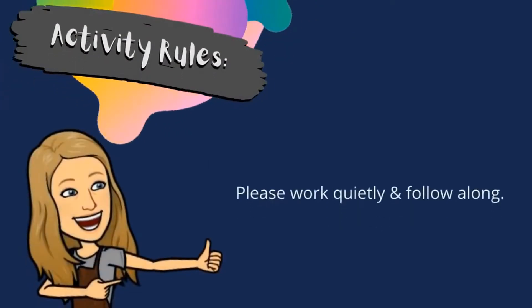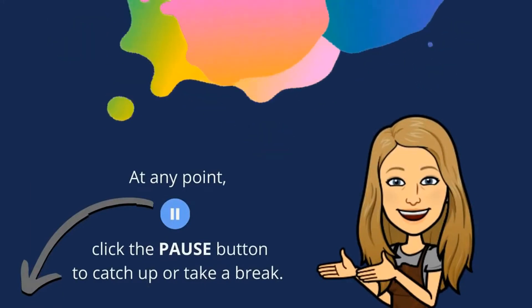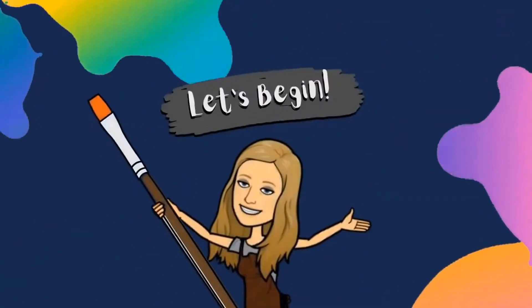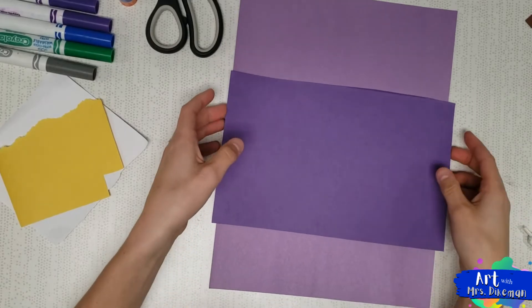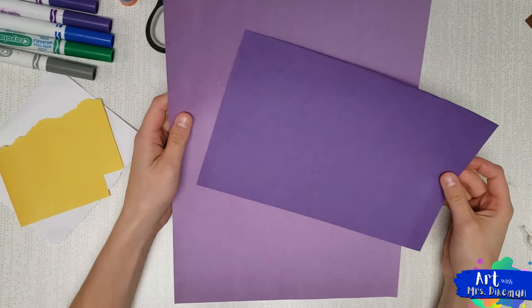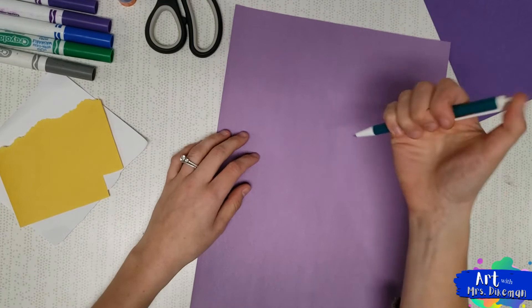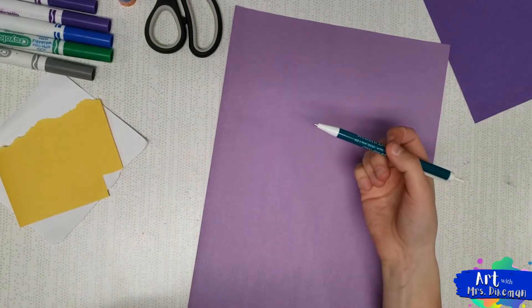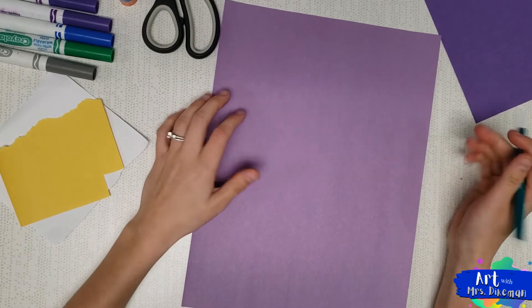Please work quietly and follow along. At any point, click the pause button to catch up or take a break. Today we're going to be making paper owls. We'll use our large paper first and then our half sheet later. You have two different colors. I'll be using a pen so you can see my lines clearly, but you'll want to use a pencil just in case you need to erase.